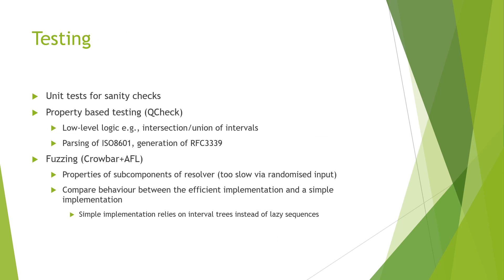Finally, some remarks on testing. We use unit tests for very basic checks. We use property-based testing for a lot of the logic components. And then we use fuzzing when we still want property-based testing but a randomized input is too slow — so we want something that can time out and make an educated guess during the search. Crowbar and AFL are a good fit for this. We use this to test the more time-consuming logic components, and also to test the overall implementation by comparing it to a simpler one, which has much lower code complexity as it relies on interval trees as implementation.